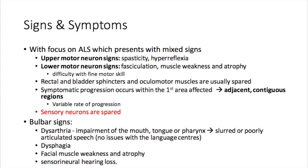Symptomatic progression occurs within the first area affected and then eventually adjacent contiguous regions may become involved, with the rate of progression being quite variable. It's worth noting that sensory neurons are spared. Patients can present with dysarthria — impairment of the mouth, tongue or pharynx — resulting in slurred or poorly articulated speech, though there are no issues with language centers. They can also have dysphagia, muscle weakness and atrophy, and sensorineural hearing loss.